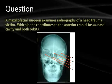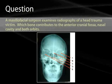We'll start by asking a question. A maxillofacial surgeon examines radiographs of a head trauma victim. Which bone contributes to the anterior cranial fossa, nasal cavity, and both orbits? The answer is B, the ethmoid bone, which has the components of the medial wall of each orbit. It has the horizontal and vertical plate and the crista galli into the cranial vault, as well as the descending vertical and horizontal plates that are components of the viscerocranium.